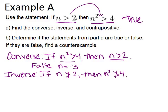The notation of a greater-than sign with a line through it isn't quite right. We should think about what it means to not be greater than 2 — that means you're less than or equal to 2. And similarly, not greater than 4 means less than or equal to 4. So the inverse is: if n is less than or equal to 2, then n squared is less than or equal to 4.